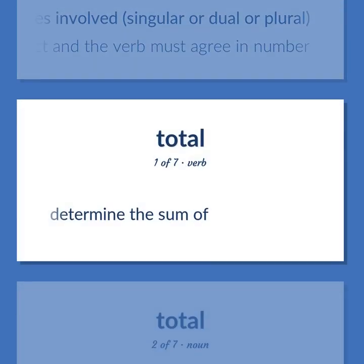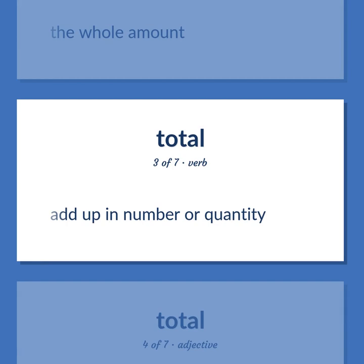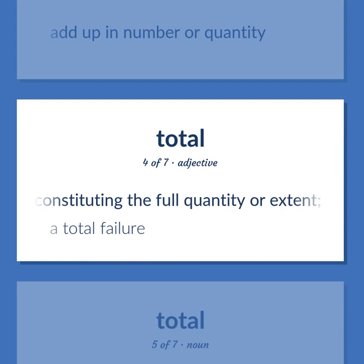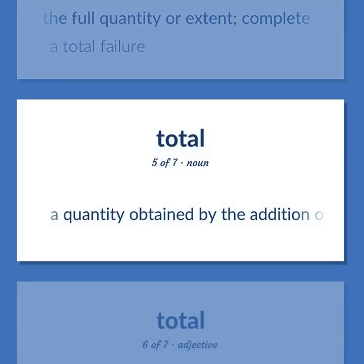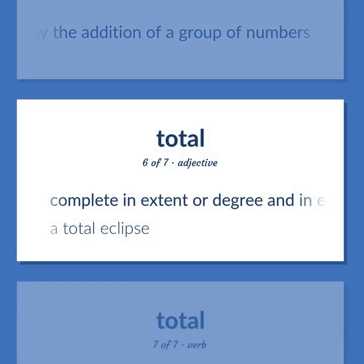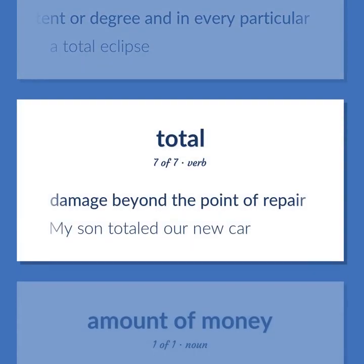Total: To determine the sum of. The whole amount. To add up in number or quantity. Constituting the full quantity or extent; complete — a total failure. A quantity obtained by the addition of a group of numbers. Complete in extent or degree and in every particular — a total eclipse. To damage beyond the point of repair — my son totaled our new car.